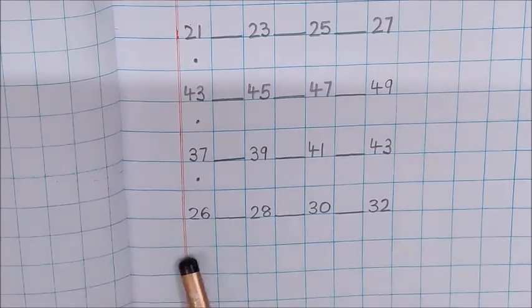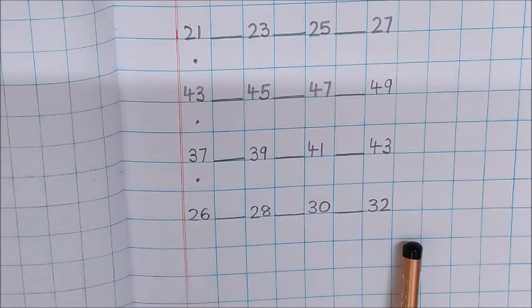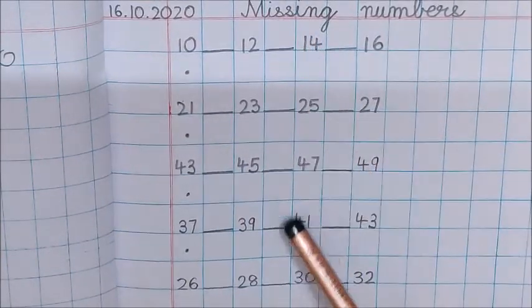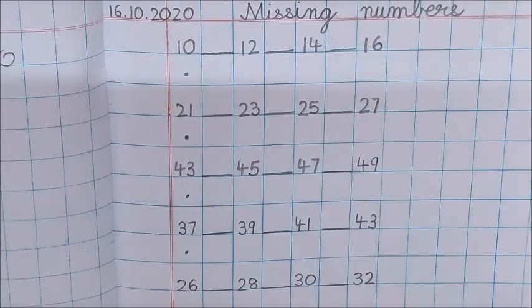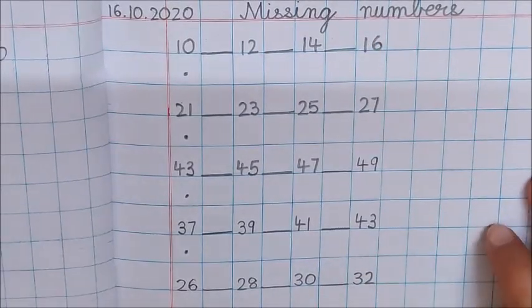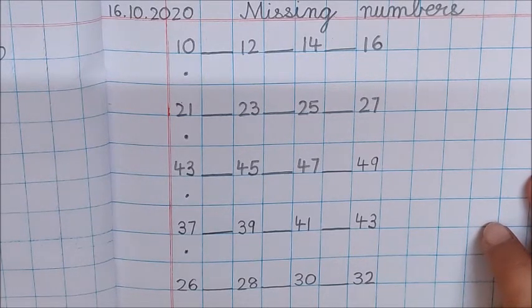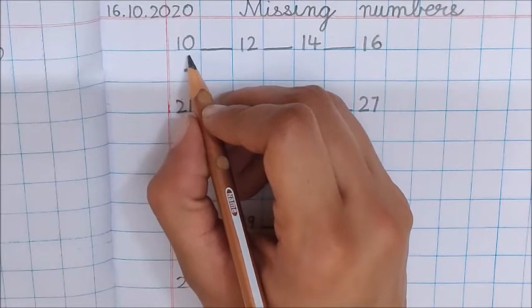Written children? Very good. So you can see children that some numbers are missing in between. But we know how to find them. How to find them children? Count and you will find them. So let us begin with the first one.